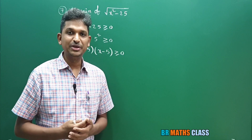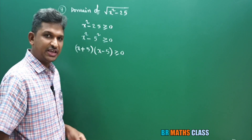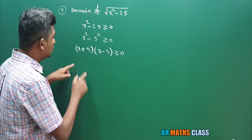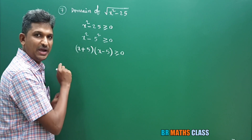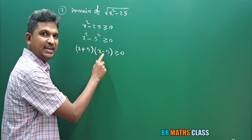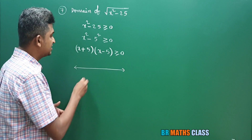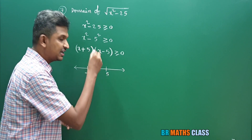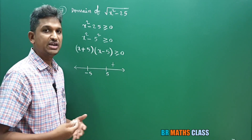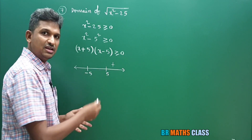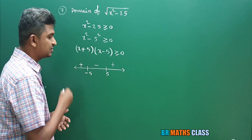By using the wavy curve method we can easily find for what values of x this inequality holds good. As these are linear factors, I'll equate each to zero: x plus 5 equals zero gives x equal to minus 5, and x minus 5 equals zero gives x equal to 5. Mark them on the number line — minus 5 comes first. In the rightmost corner write plus, then alternate symbols: minus, plus.